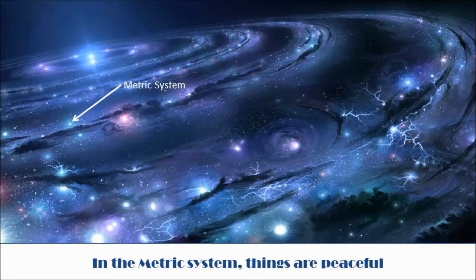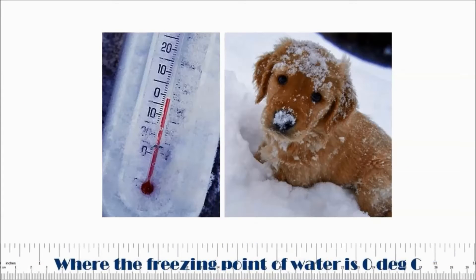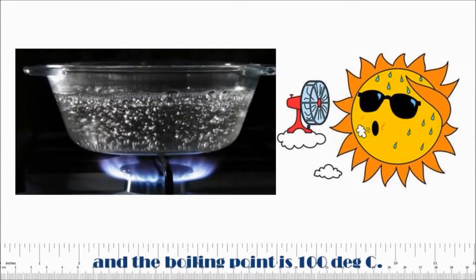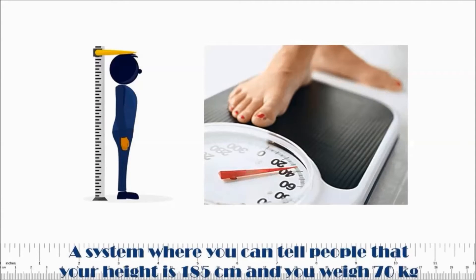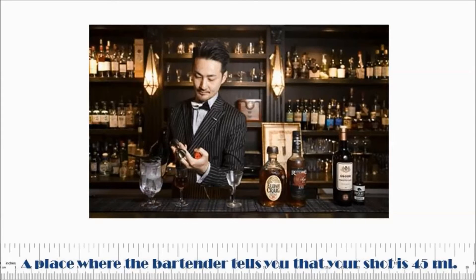In the metric system, things are peaceful with all its inhabitants living an easy life, measuring things accurate to their nearest millimeter, where the freezing point of water is zero degrees celsius and the boiling point is 100 degrees celsius. You can't get more layman than that. A system where you can tell people that your height is 185 centimeters and you weigh 70 kilograms. A place where the bartender tells you that your shot is 45 milliliters.